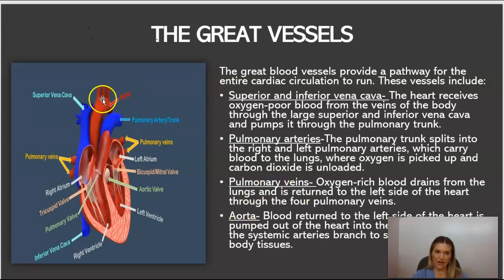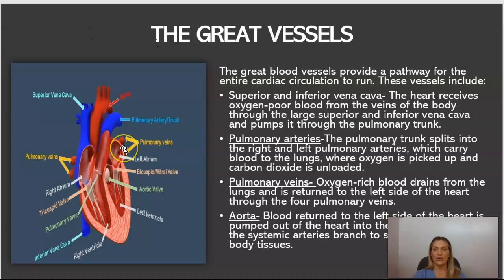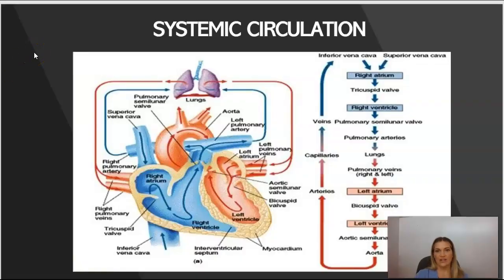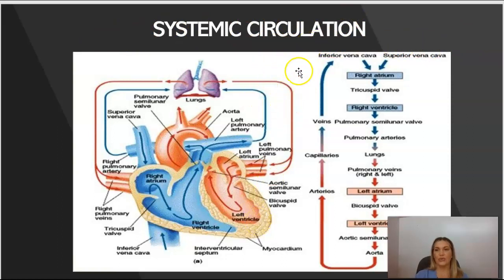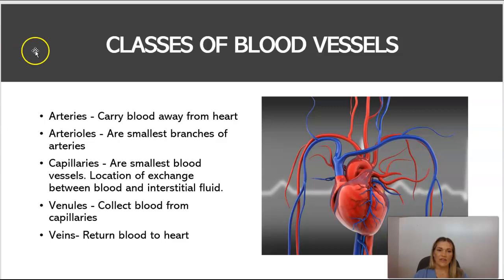The aorta — which we said we would talk about — receives blood pumped out of the left side of the heart, from which the systemic arteries branch to supply the rest of the body tissues. This picture of the systemic circulation visually describes how blood moves from the vasculature through the heart.